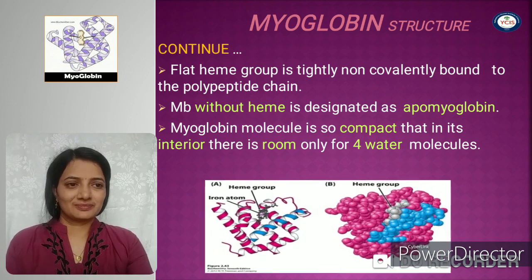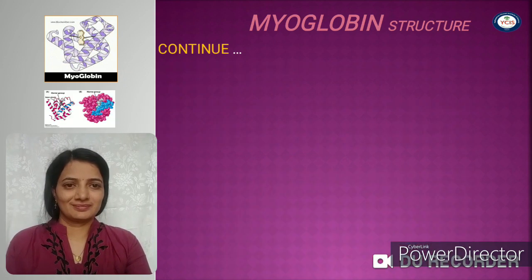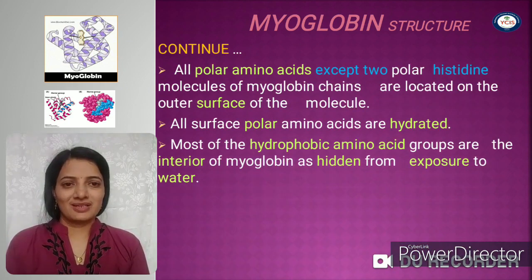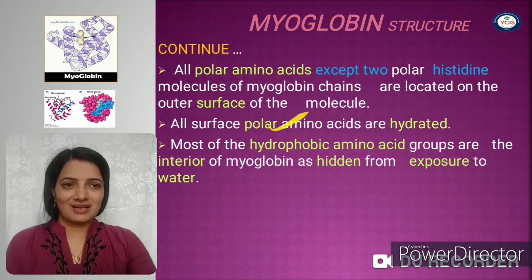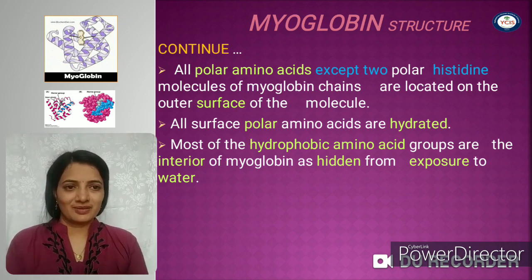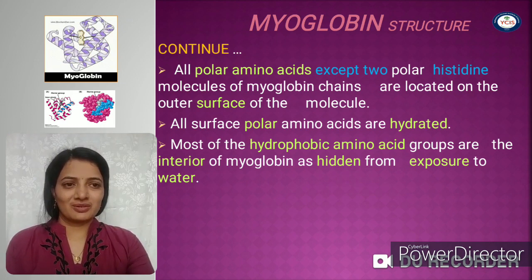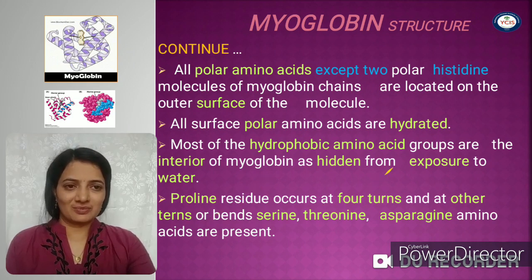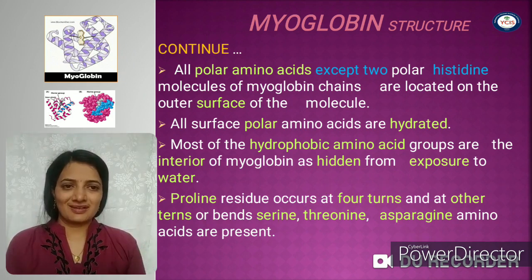All polar amino acids are present on the surface of the molecule except two histidine residues. These polar amino acids are hydrated, while all non-polar (hydrophobic) amino acids are present at the interior of the molecule, hidden from exposure to water. At the alpha helices, proline residues occur especially at four turns, and at the other turns serine, threonine, and asparagine amino acids are present.